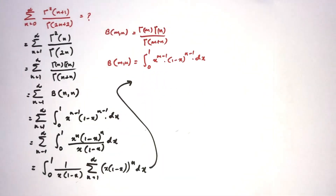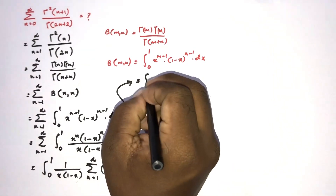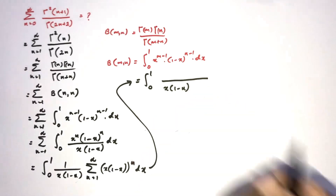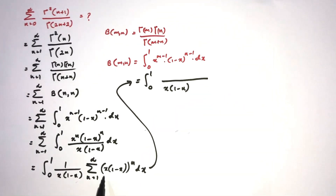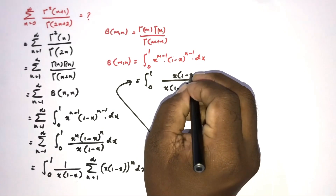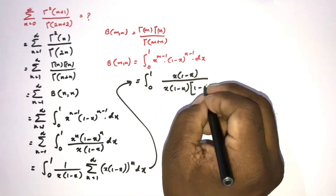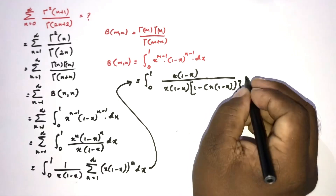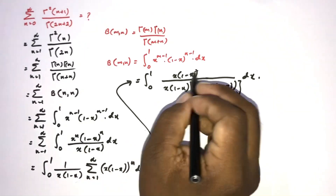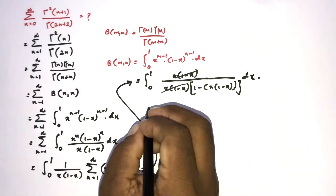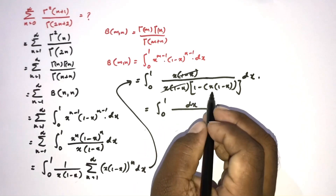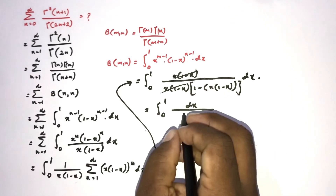Now we know this inner sum is a geometric series. So we can write the integral from 0 to 1 of 1 over x(1 minus x), times the geometric series sum, which gives x(1 minus x) over [1 minus x(1 minus x)], dx. This part cancels, leaving the integral from 0 to 1 of dx over [1 minus x(1 minus x)].